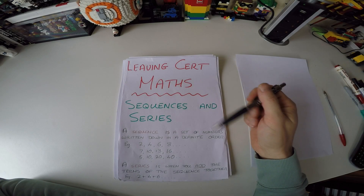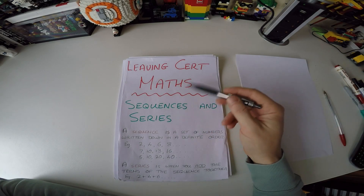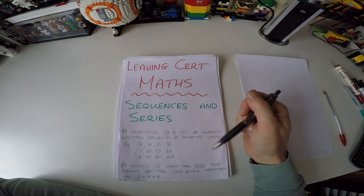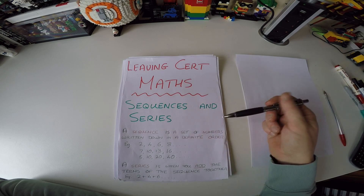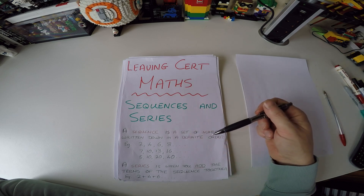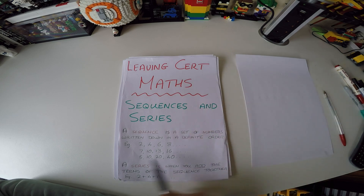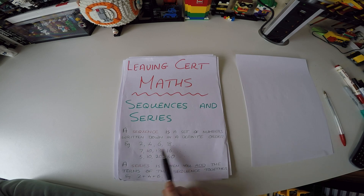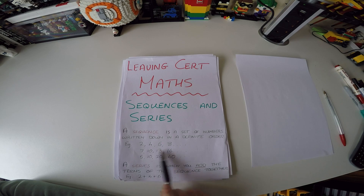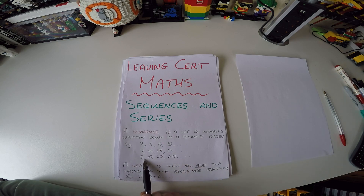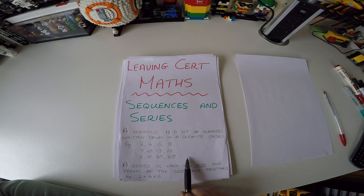This video is about sequences and series for Leaving Cert maths. A sequence is a set of numbers written down in a definite order, like 2, 4, 6, 8 with a difference of 2; or 7, 10, 13, 16 with a difference of 3. Then something a little different: 5, 10, 20, 40 — where we double each time.